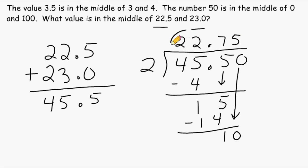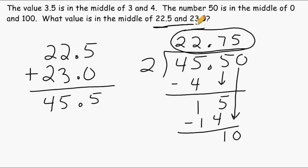So 22 and 75 hundredths is the value that is right in the middle of 22 and a half and 23.